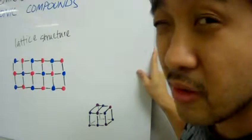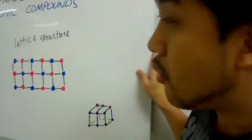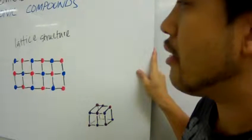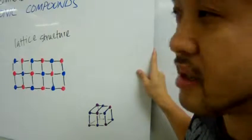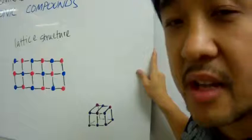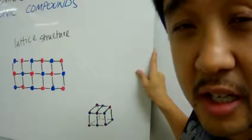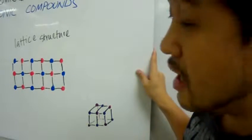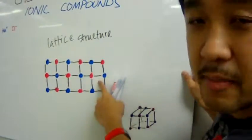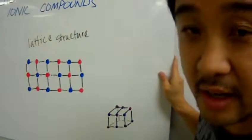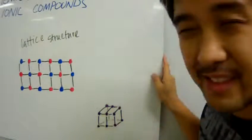There sure are a lot of ions forming a simple grain of salt, and that is true for all ionic compounds. Whatever ionic compound you have, there are tons and tons of ions repeating, alternating between positive and negative ions, on and on. And that, my friends, is an ionic compound — with tons of ionic bonds forming that enormous lattice structure.